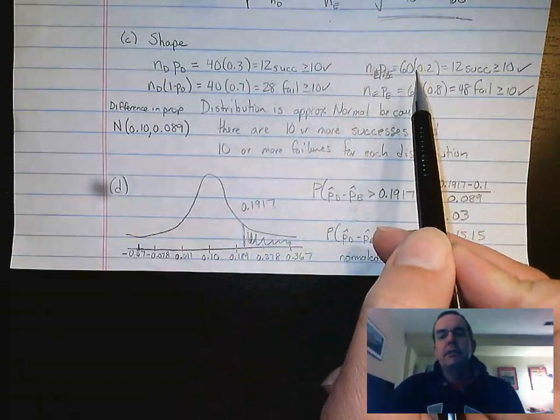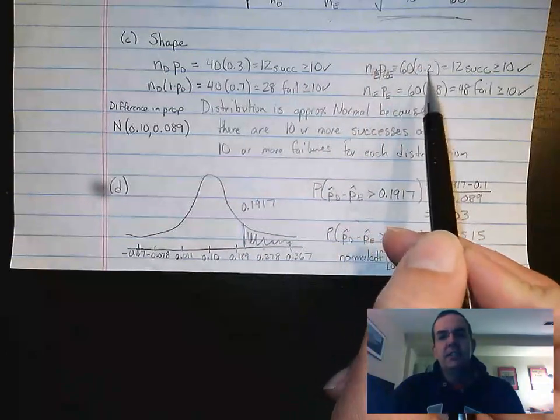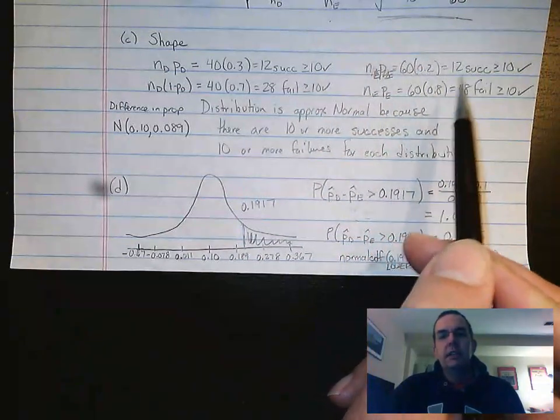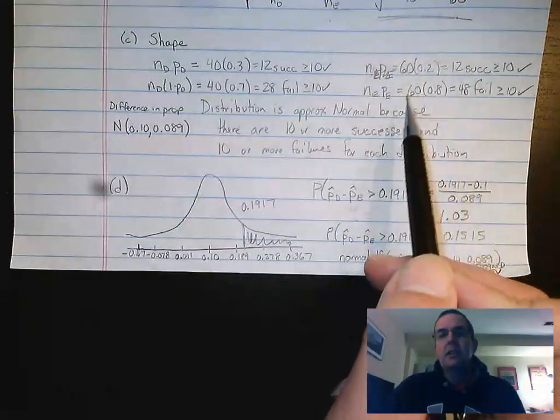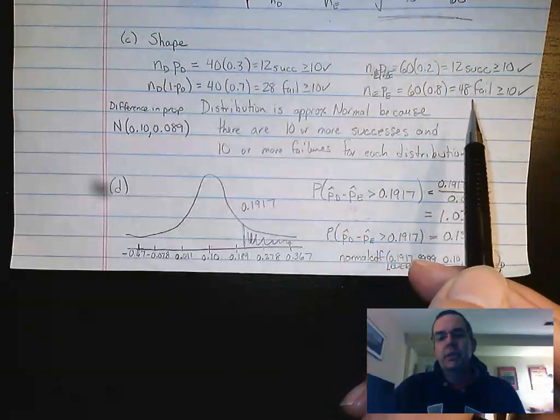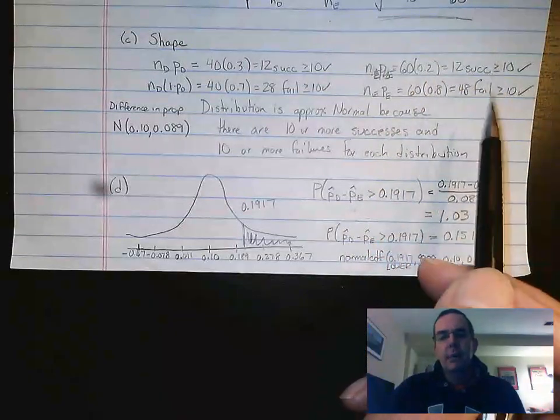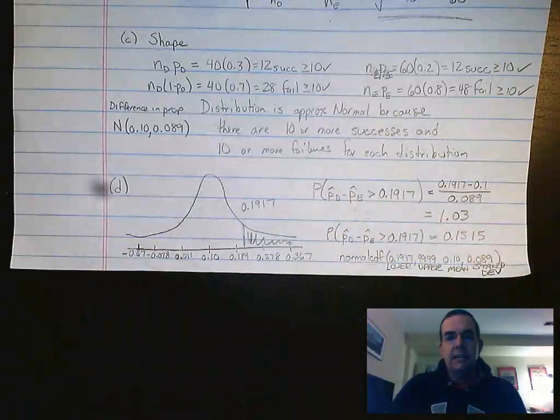Now I need to do it for E. For E, I'm going to do the sample size 60 times 0.2 gives me 12 as well for successes. And I do 60 times 0.8, which gives me 48 failures. Again, both of them are greater than or equal to 10.